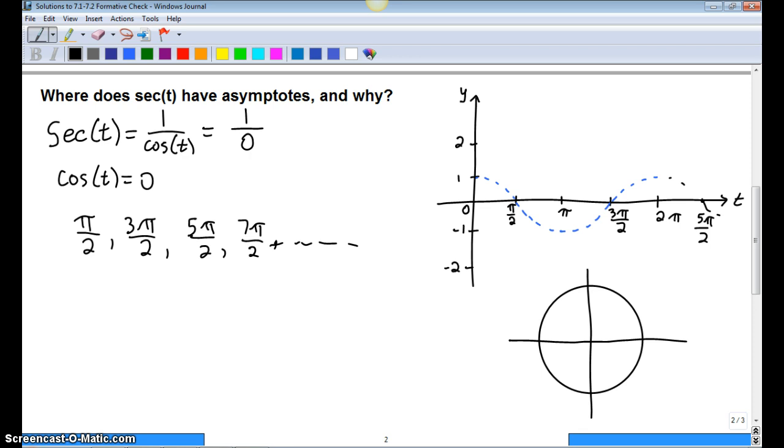π/2, 3, 5, 7, 9, 11 π/2. We can simplify that: π/2 plus π times k, where k is an integer.